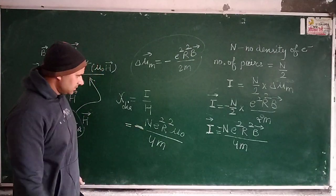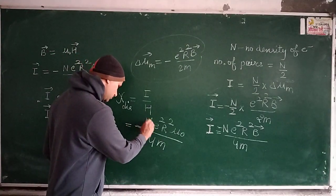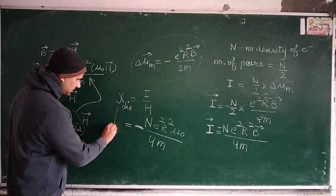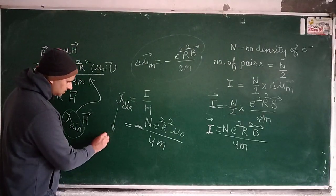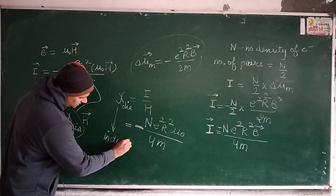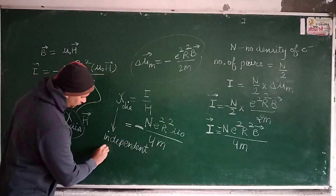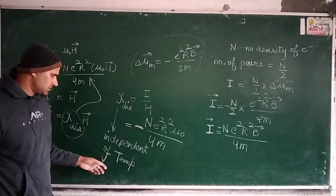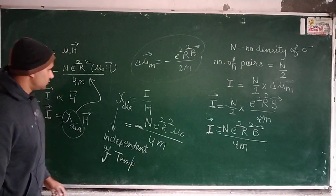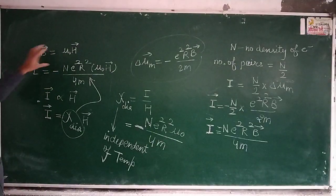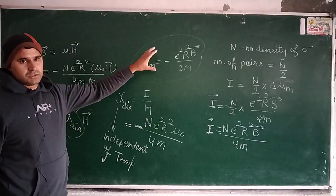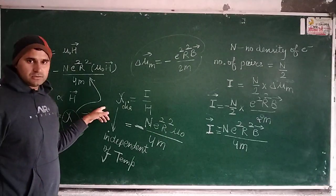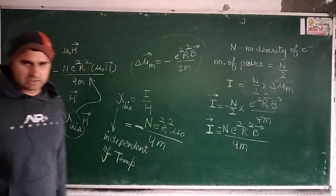The susceptibility of diamagnetic substances is negative. Also note there is no temperature factor in this formula, so the susceptibility of diamagnetic materials is independent of temperature. This theory is based on the motion of electrons in their orbits, and it was given by Langevin — so this is known as Langevin's theory of diamagnetic substances.